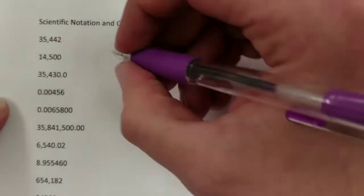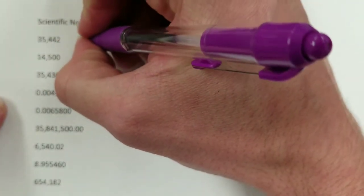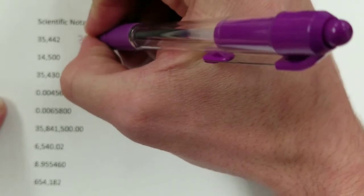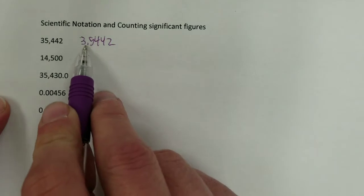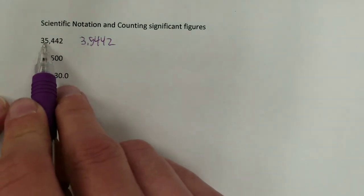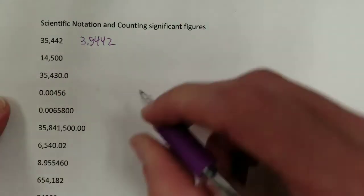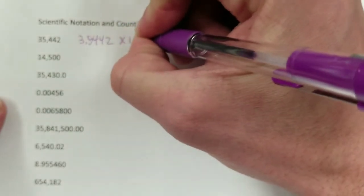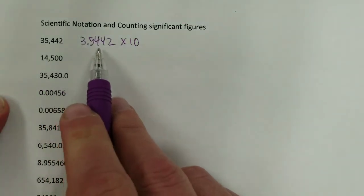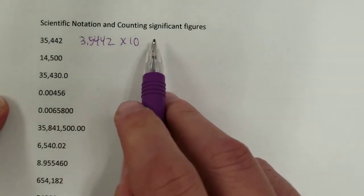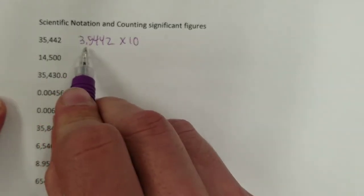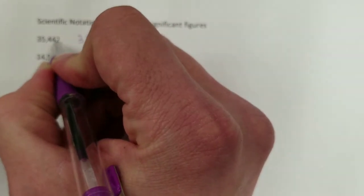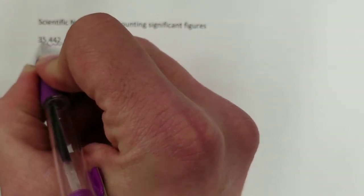What you will typically get in scientific notation is a format of a number between 1 and 10. I'm going to take this exact number and just put a decimal right here to make it 3.5442 times 10 to some power. So it's going to be something times 10 to some power for scientific notation. In order to take this number and turn it into 3.5442, I have to take the decimal and move it 1, 2, 3, 4 places.